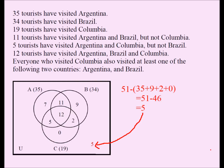Now that the Venn diagram is complete with all eight regions filled out — note that a Venn diagram with three circles always has exactly eight regions — we are ready to answer the questions.